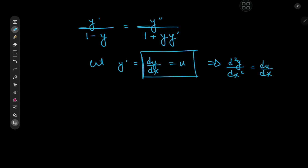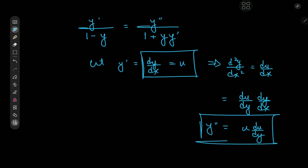That introduces the problem of having a differential equation in three variables, which is not ideal. So we'll expand using the chain rule by writing this as du by dy times dy by dx, and dy by dx is our u variable, so we have u times du by dy as the second derivative. With this transformation, our equation transforms into u divided by 1 minus y equal to u times du by dy divided by 1 plus u times y.